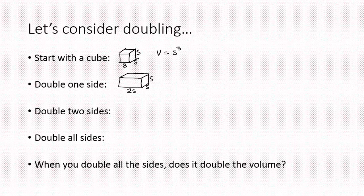The volume of the original cube is s³. If I double one side, the new volume is 2s × s × s, which equals 2s³. That's just twice the previous volume. So when you double one side of a cube, the volume doubles.